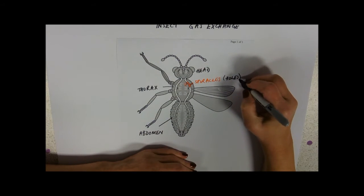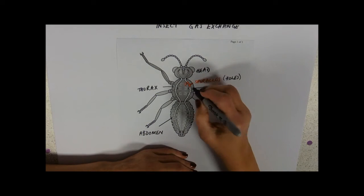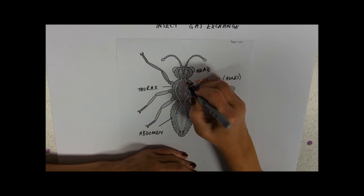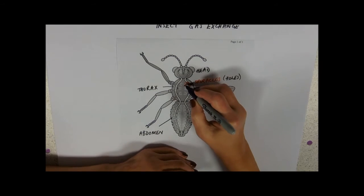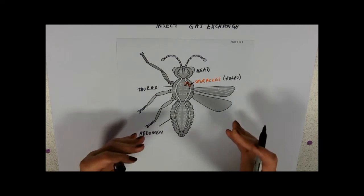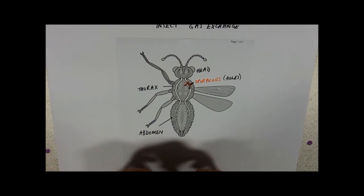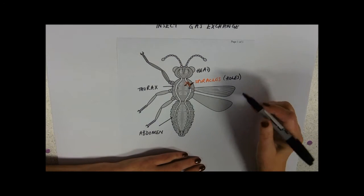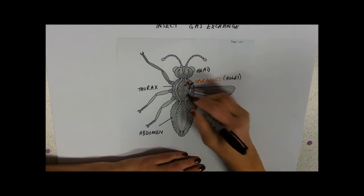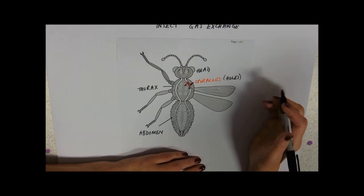So the spiracles are really holes to the outside. So these are going to let our gases in and the oxygen is going to come in, it's going to diffuse around this system and down into the cells. That's pretty much it. These tubes lead everywhere in the insect. So they're the holes to the outside to allow oxygen in and carbon dioxide out.